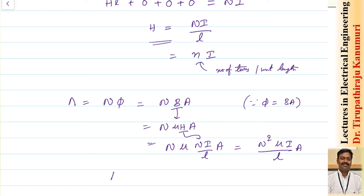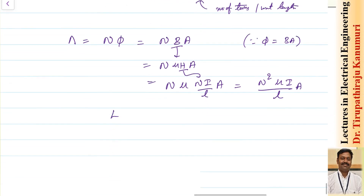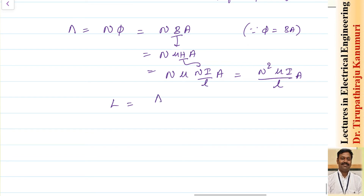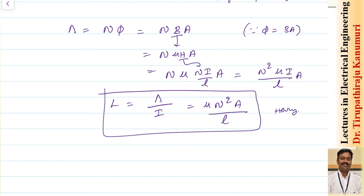Now to calculate the inductance — inductance equals flux linkages per unit current. Dividing by I, the current cancels out, giving L equals mu times N-squared times A divided by L. This is in Henry. This is the value of the inductance of an ideal solenoid.